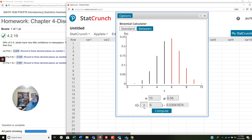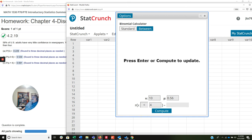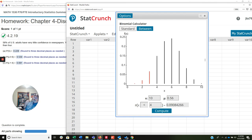And then the last one is less than 4. I'm going to click Compute. And 0.091, and there is that answer there.